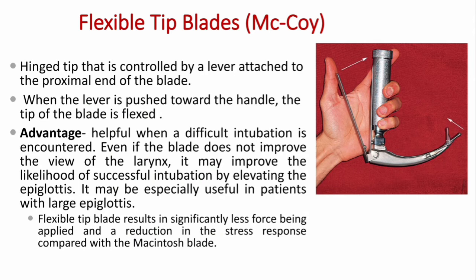Another type of blade is the flexible tip blade, also known as the McCoy blade. It has a hinged tip controlled by a lever attached to the proximal end of the blade; when the lever is pushed toward the handle, the tip of the blade is flexed. This is helpful when a difficult intubation is encountered — even if the blade does not improve the view of the larynx, it may improve the likelihood of successful intubation by elevating the epiglottis. It may be especially useful in patients with a large epiglottis. The flexible tip blade results in significantly less force being applied and a reduction in the stress response compared with the McIntosh blade.